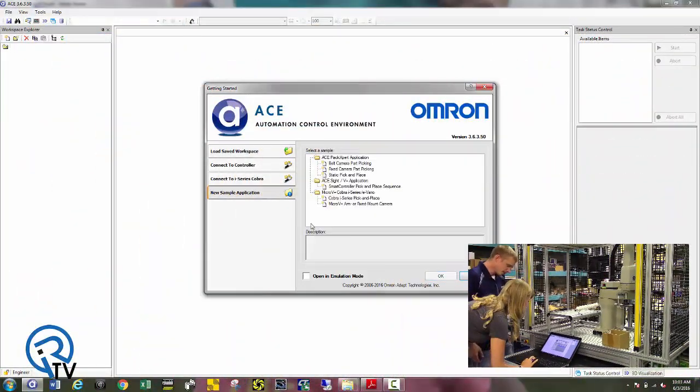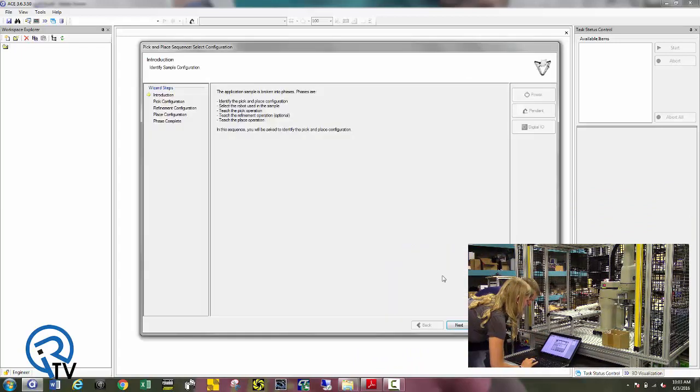Choose new sample application. Okay. All right, choose smart controller pick and place sequence. Okay, and press OK. All right, so hit next.